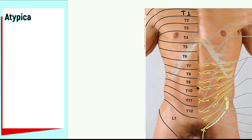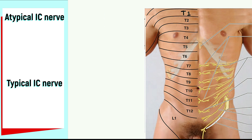Now I will demonstrate what are typical and atypical intercostal nerves. Typical intercostal nerves supply only the thorax. If a nerve supplies any part of the body other than the thorax, it is labeled as an atypical intercostal nerve. There are 11 intercostal nerves, derived from the ventral rami of the first 11 thoracic spinal nerves.